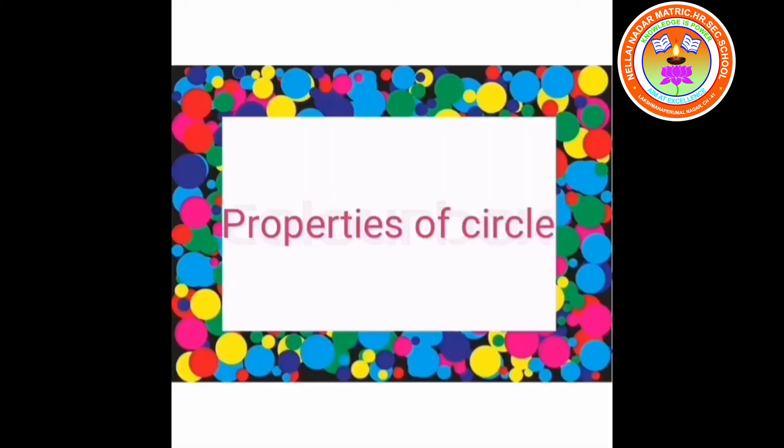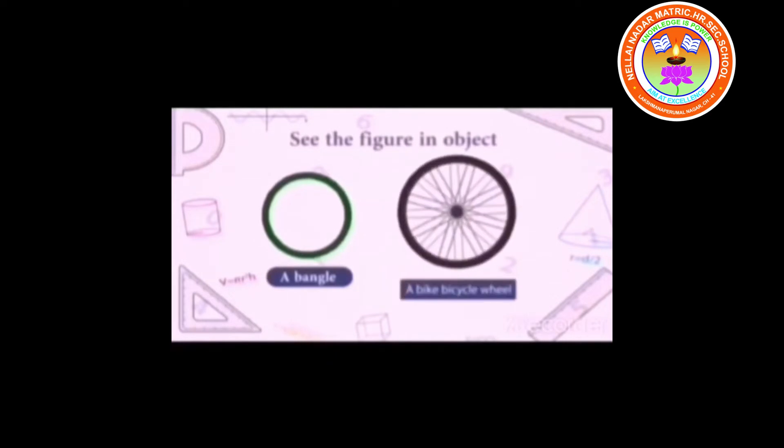Now, let me explain properties of circle. See the figures of the given object. A bangle and a bicycle wheel. The above objects are circular.